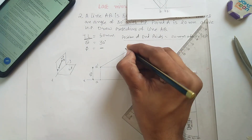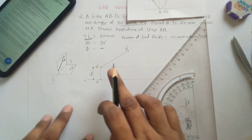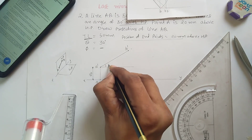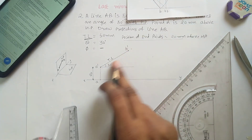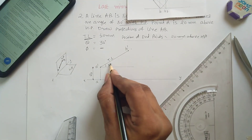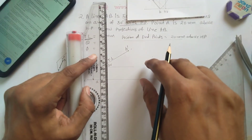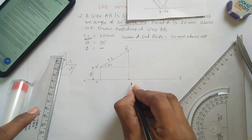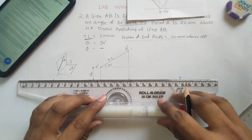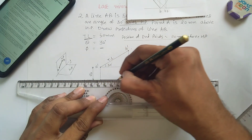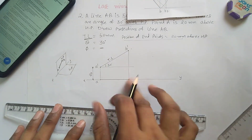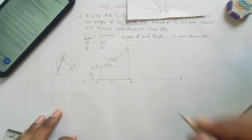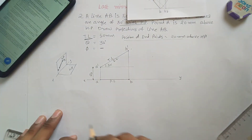This point is your B-dash. Viewing from the front gives you the front view showing true length. This angle is 30 degrees and you used the true length, so write theta here. Project these points onto the XY line to get point B. The true length, elevation length, and plan length can now be identified — in this case, the elevation length and plan length are the same. This completes problem number two.